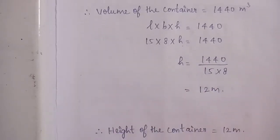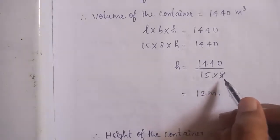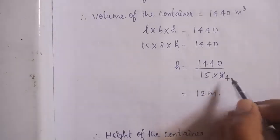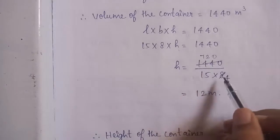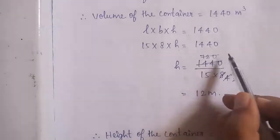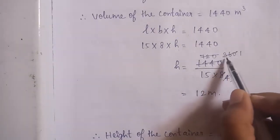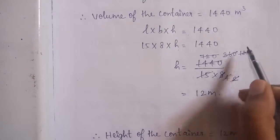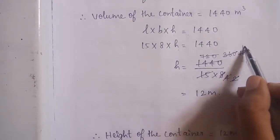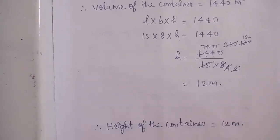You can simplify using the tables — cancelling by 2 repeatedly: 1440 divided by (15 into 8). After simplification through cancellation, 15 into 12 is 180, confirming H = 12. Therefore, the height of the container is 12 meters.